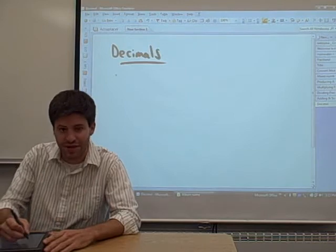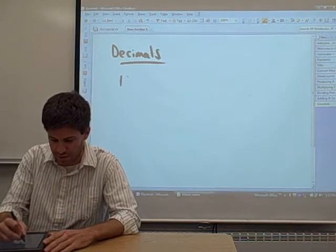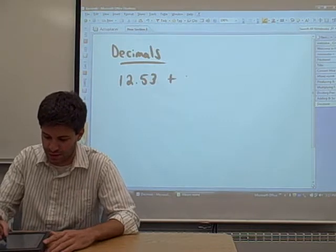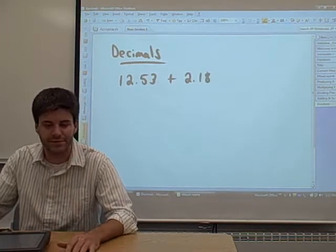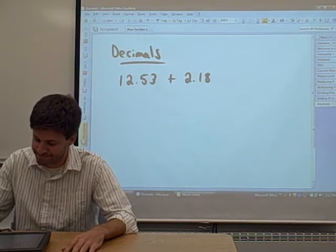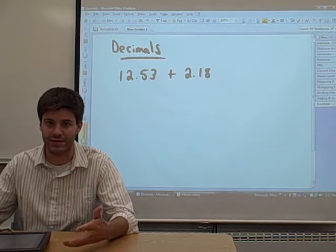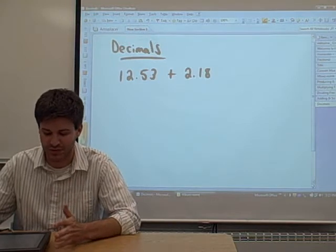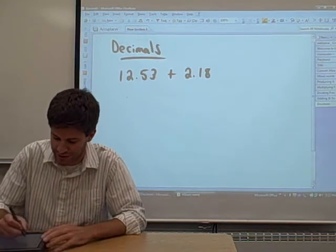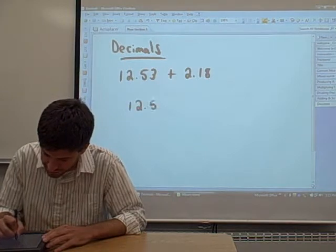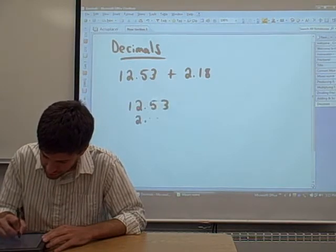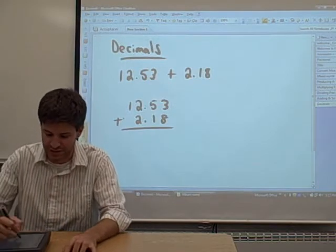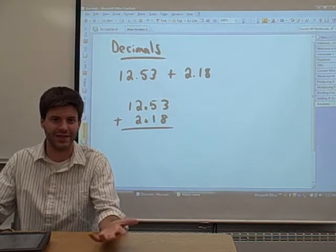It's pretty easy. Let's say for an example, we want to add 12.53 plus 2.18. The way that we add decimals and subtract decimals, the trick is to line up all the decimals. So usually when you're adding numbers, you line them up vertically, right? 12.53 and 2.18. The trick with adding decimals is that the decimals in each number have to be lined up.